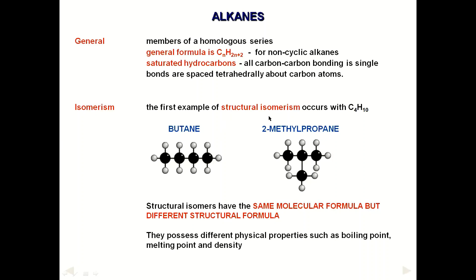There is something called structural isomerism. If you look at butane and 2-methylpropane, the formula for both of these hydrocarbons is C₄H₁₀ — four carbon atoms and ten hydrogen atoms in both. They have the same molecular formula but different structures. Structural isomers have the same molecular formula but different structural formulas. They also have different physical properties such as boiling point, melting point, and density.